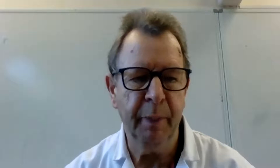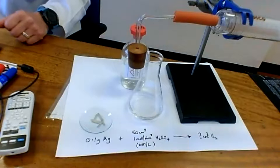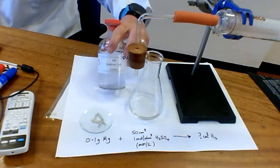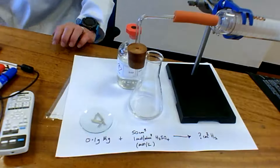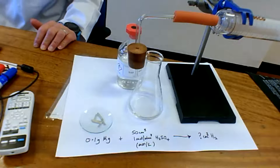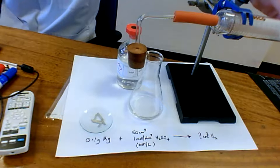If I look at a standard sort of experiment you might have come across in a laboratory: I'm going to have 0.1 grams of magnesium, I've got some sulfuric acid — 50 cubic centimeters of a concentration called one mole per cubic decimeter or one mole per liter — and I'm going to try to measure the volume of hydrogen produced.